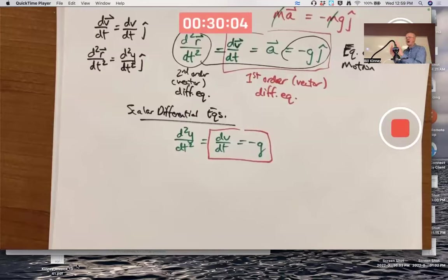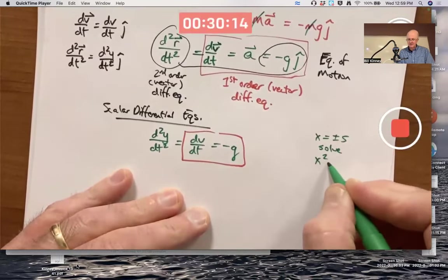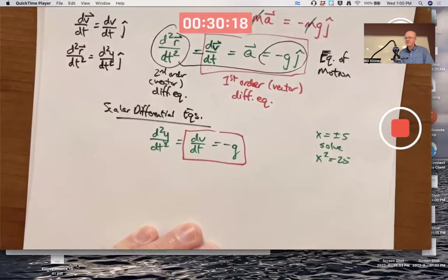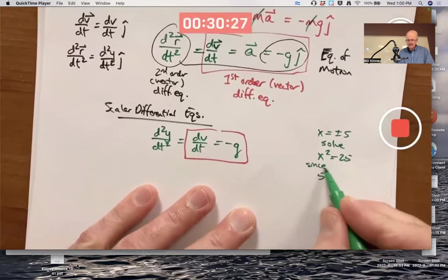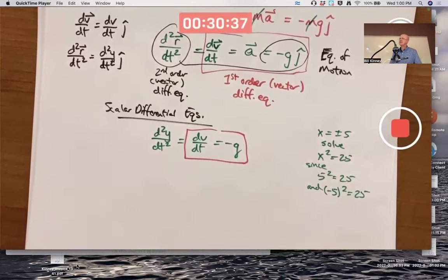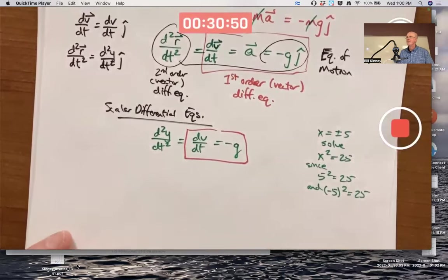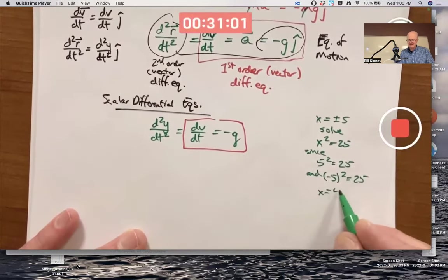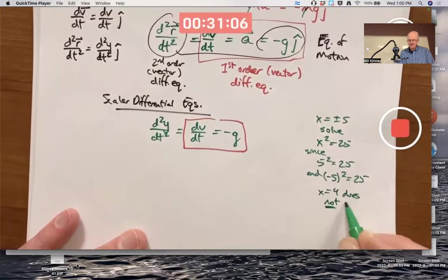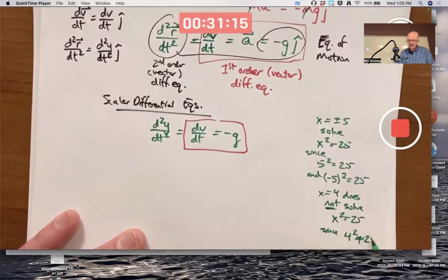Plus or minus 5 satisfy X squared equals 25. X equals plus or minus 5 solve X squared equals 25 because when you substitute them into the equation in place of X, it works. 5 squared is 25, and negative 5 squared is 25. Substituting them satisfies the equation. No other numbers work. 4 squared is not 25. X equals 4 does not solve X squared equals 25 since 4 squared is not 25, it's 16.